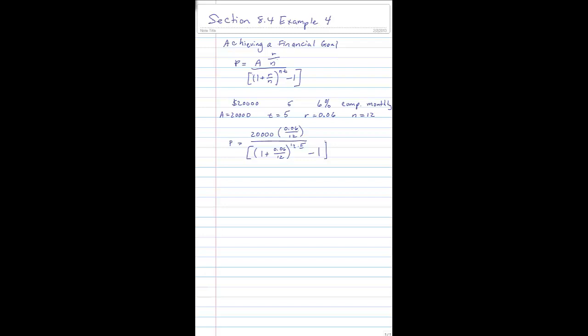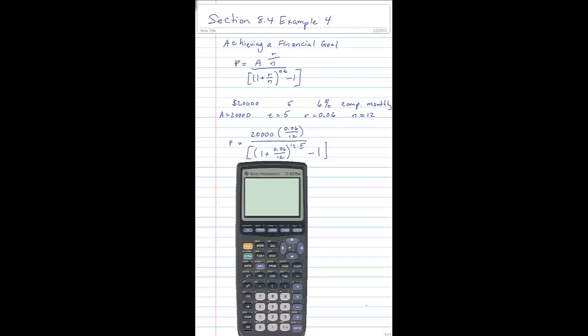All right, let's show using the calculator for this. And I like to start with the denominator. So I'm going to start 1 plus 0.06 divided by 12. And I'm going to hit enter, because that gives me what's in parenthesis.